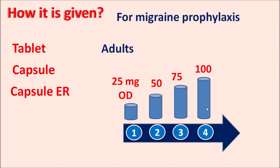So that's about topiramate. Topiramate is an anti-epileptic agent which can block voltage-gated sodium channels, voltage-gated calcium channels, and AMPA-gated sodium channels, while at the same time activating GABA-gated chloride channels, which produce the inhibitory response. In our next video, we will cover another important anti-epileptic agent. Hope you enjoyed this video — please subscribe to our channel, share this video with your friends, and post your comments in the comment box. Thank you for watching.